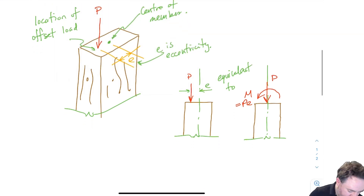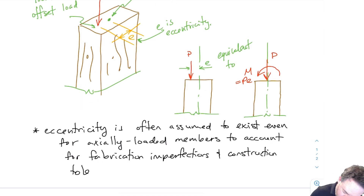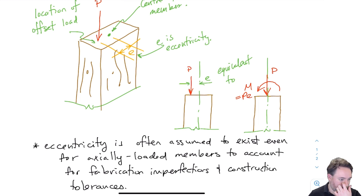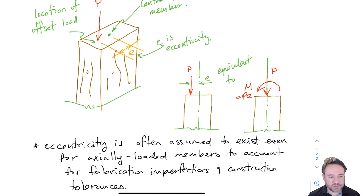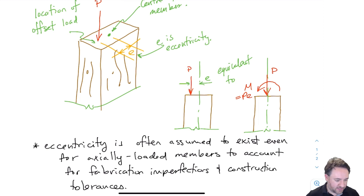A note: this eccentricity E is often included for members considered axially loaded, because fabrication imperfections or construction tolerances mean the load may not be applied perfectly at the centroid. We can assume a nominal eccentricity E to account for those effects and ensure that a little accidental eccentricity due to construction won't cause member failure.